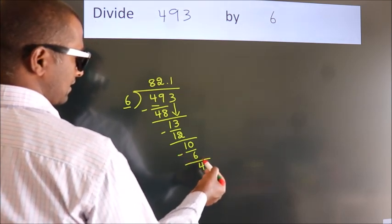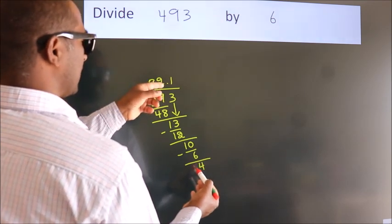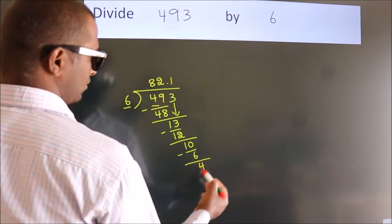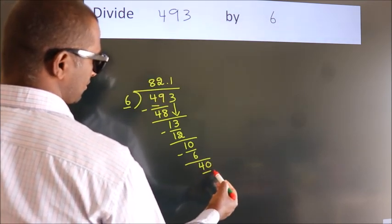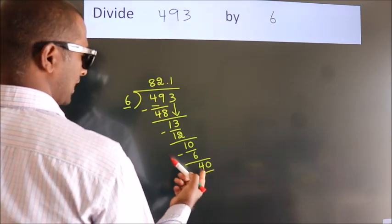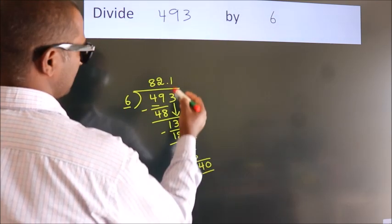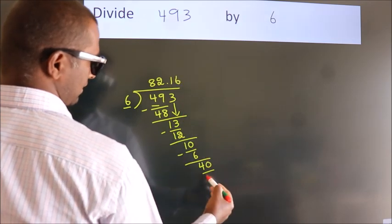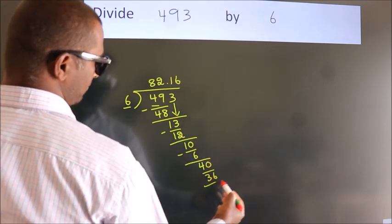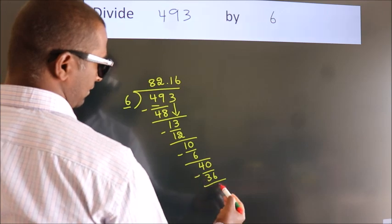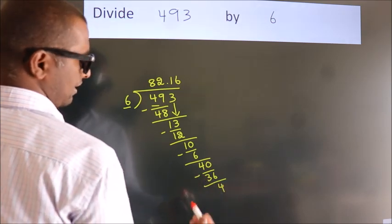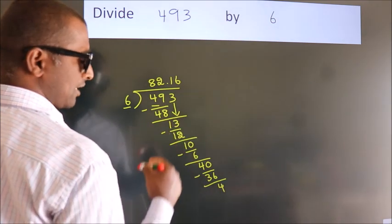After this, we already have the decimal, so directly take 0. So 40. A number close to 40 in the 6 table is 6 times 6, 36. Now we subtract. We get 4. Now you observe.